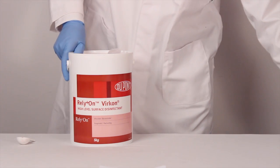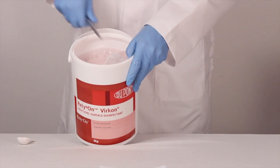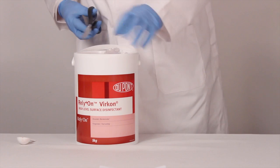The Virkon product is bagged to help prevent any moisture, so carefully cut the seal of the bag using a pair of scissors.